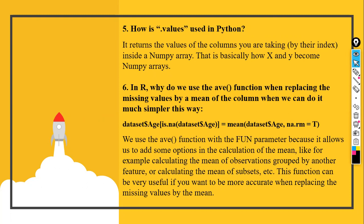In R, why do we use the average function when replacing missing values by mean of a column can be done in a simpler way? Within the mean function, you can remove missing values and replace them with the mean directly. However, an alternative is useful if you want to group on a certain set of values or calculate the mean of specific subsets of features. In that case, having this function becomes more prominent and more accurate when replacing missing values using a mean. The functionality remains the same, but it can be used for a specific set of purposes where required.